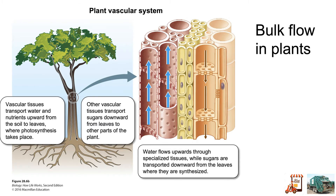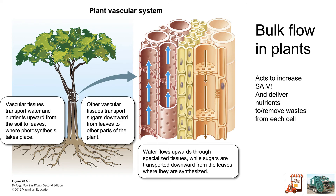In plants, bulk flow works through a very similar system. Instead of veins and arteries, they have different types of vascular tissues — the xylem and phloem. The xylem delivers water and nutrients from the soil up to the leaves. Another set of tubes transports sugars made by photosynthesis in the leaves out to the rest of the plant. This is all about bulk flow — increasing the surface area of the plant artificially by adding tubes that innervate almost all cells, delivering nutrients and removing waste using the plant vascular system.